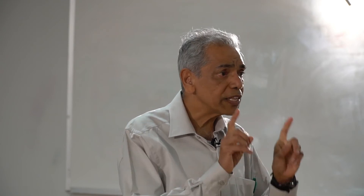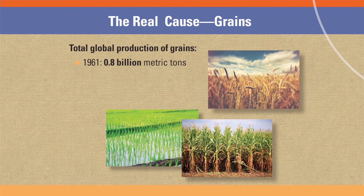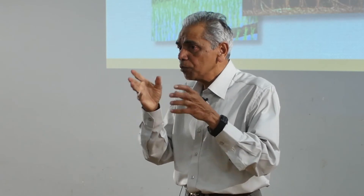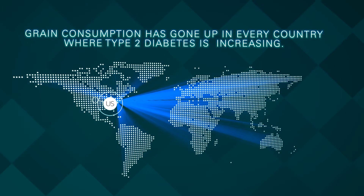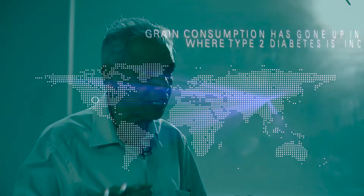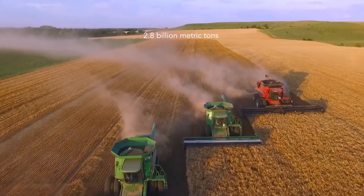My simple answer is grains. During the last 50 years, the overall production of grains in the world has gone up from 0.8 billion metric tons to 2.8 billion metric tons. More importantly, the energy consumption and the percentage of energy consumed from grain-based products have gone up in every country where type 2 diabetes is increasing. It used to be below 30%. Now it is 50% in the United States and developed countries, and 70% in developing countries such as India. Grain is what you are consuming most in terms of energy intake every day.